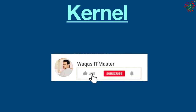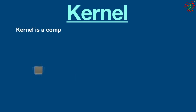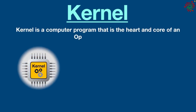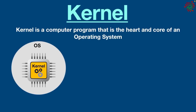Hello everyone, welcome back to another video. Today in this tutorial we are going to talk about what is kernel in operating system. Kernel is a computer program that is the heart and core of an operating system. Since the operating system has control over the system, the kernel also has control over everything in the system. It is the most important part — we can say it's the central component of an operating system.